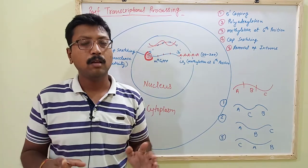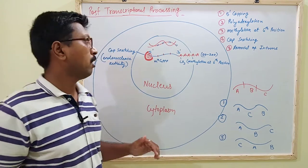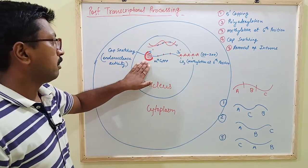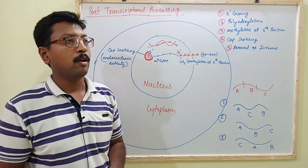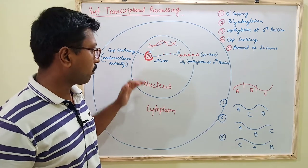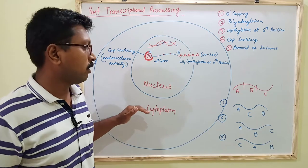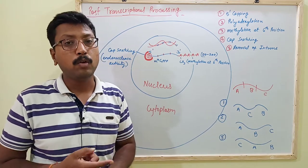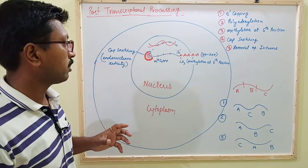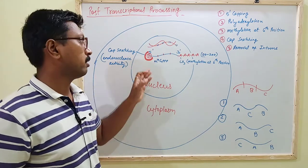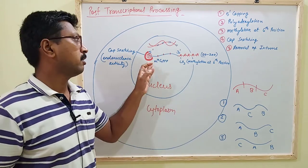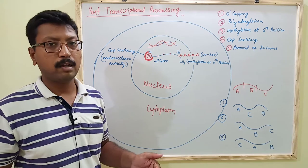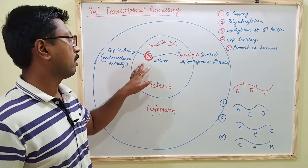Next is cap snatching, which is a special phenomenon seen in the case of the influenza virus. You can see the C-shaped red color area here — this represents cap snatching. In the case of influenza virus, the transcript in the cytoplasm has endonuclease activity. This transcript acts on the cap, and the cap gets triggered for translation. Cap snatching acts as a promoter in the case of the influenza virus and is required for translation.